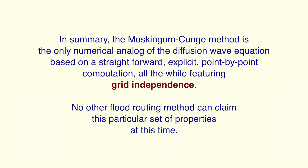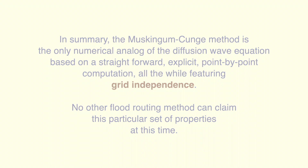In summary, the Muskingum-Cunge method is the only numerical analog of the diffusion wave equation based on a straightforward, explicit, point-by-point computation, all the while featuring grid independence. No other flood routing method can claim this particular set of properties at this time.